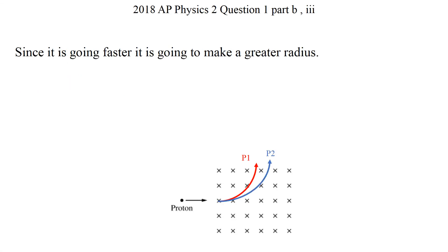And the second one, what they use is instead of going with the same speed, they're going to have another charge, the same proton, but this time it's going a little bit faster than the first case. Then since it's going faster, then it is going to have a greater radius.